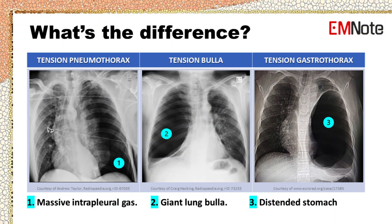Tension pneumothorax, tension bulla, and tension gastrothorax are three distinct medical conditions that share similar manifestations and similar characteristics on chest x-rays. Clinical diagnosis in the acute setting can be challenging since they all present with respiratory distress, chest pain, and tachycardia. On chest x-ray, a large radiolucent air-filled cavity is seen almost occupying the hemithorax, causing mediastinal shift and tracheal deviation. The air-filled cavities are free of lung markings and may represent massive intrapleural gas, a giant pulmonary bulla, or a distended stomach.